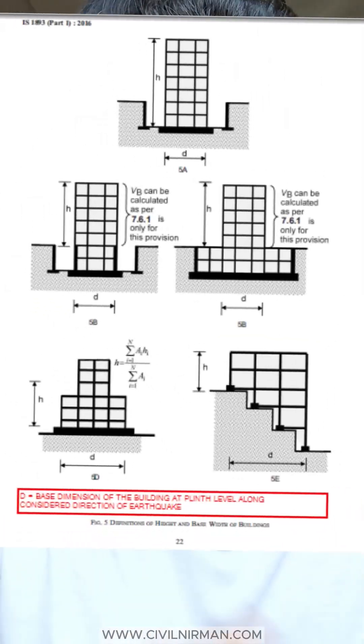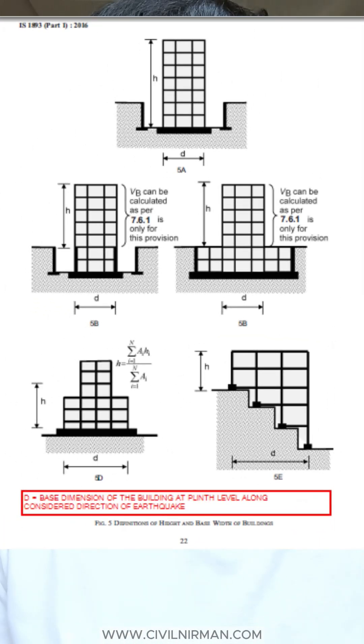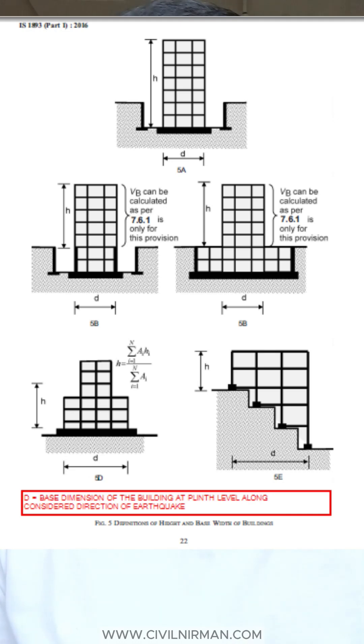The building can be on the ground, with a basement, or on a sloping region. The code suggests knowing these scenarios, which you can observe here, and from here you can decide your building height and base dimension with respect to your seismic direction. Stay tuned for more updates, and remember — don't just learn software.